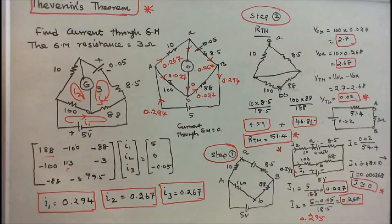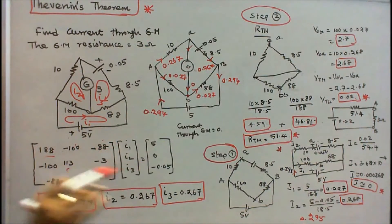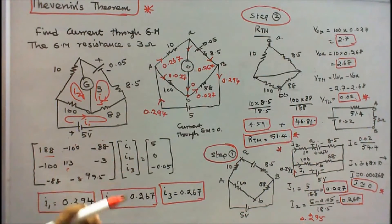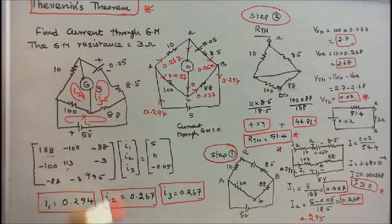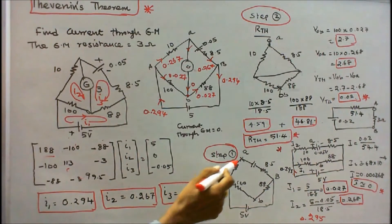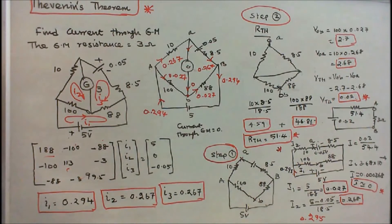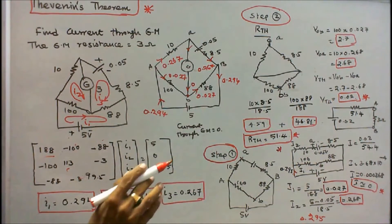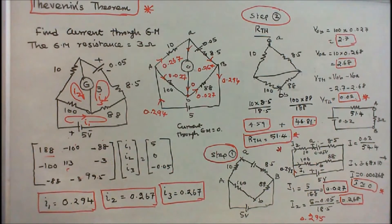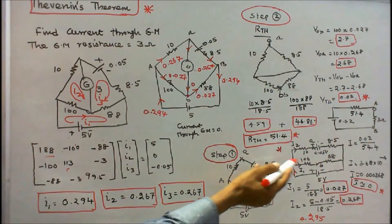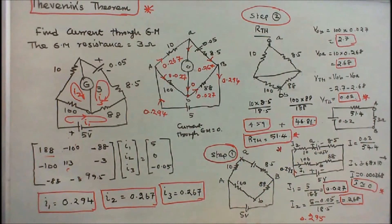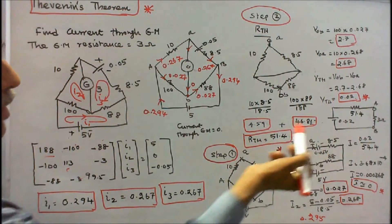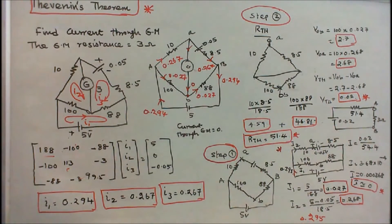Next, I apply Thevenin's theorem. The first step is to remove the load resistance — that is, remove the galvanometer — leaving open terminals A and B. I redraw the diagram showing 100 ohm and 88 ohm resistances with the 5 volt source, and 10 ohm and 8.5 ohm resistances with the 0.05 volt source, forming two separate branches to find the Thevenin's voltage.